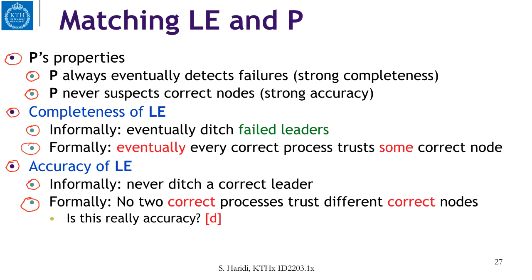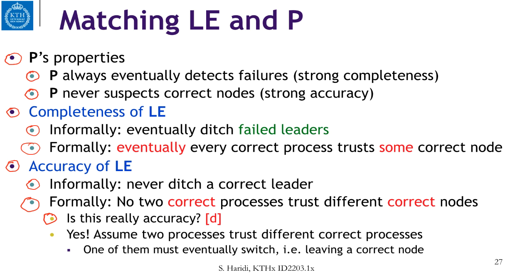Is this really accuracy? If we assume that processes are ranked so that all correct processes first trust the highest ranked process, and if that failed, it trusts the second highest, and so on — if two processes trust different correct processes, then one must have switched, leaving a correct process, and thus violating accuracy. So yes, this is really accuracy.